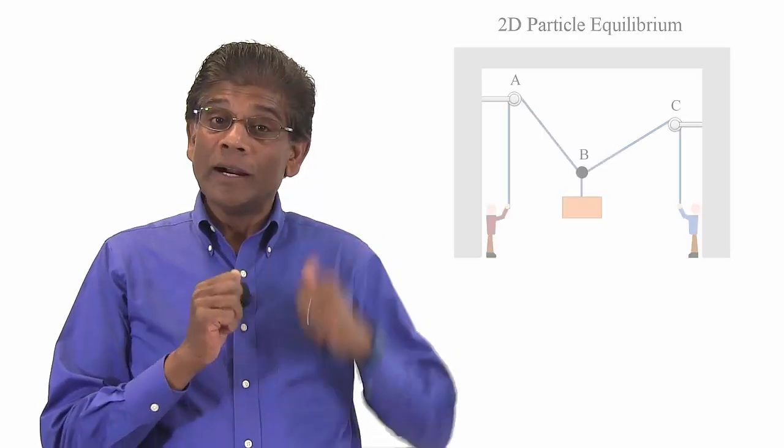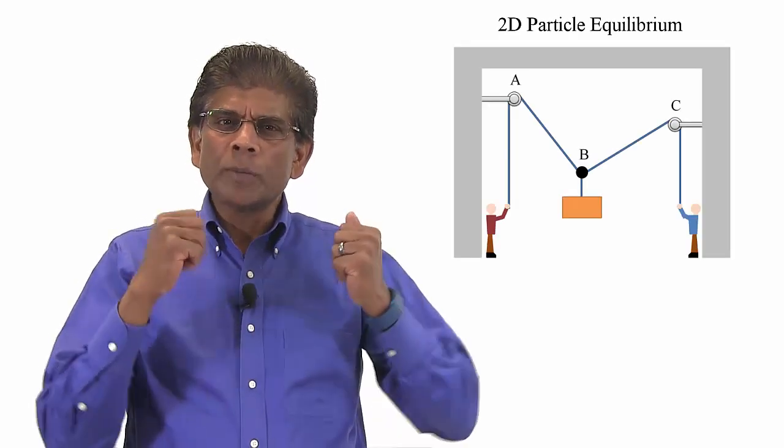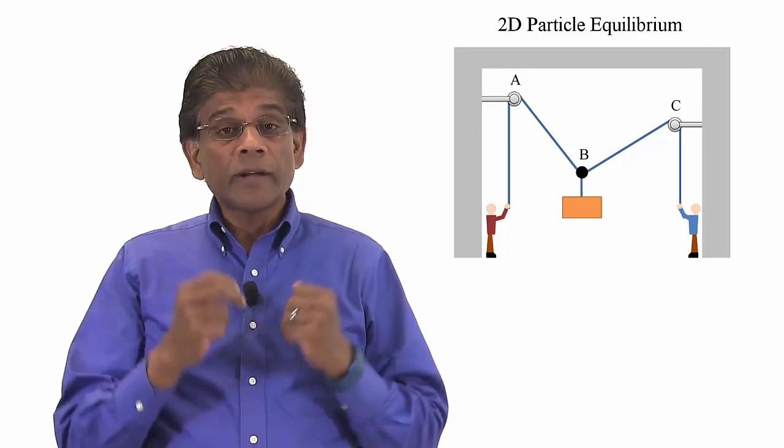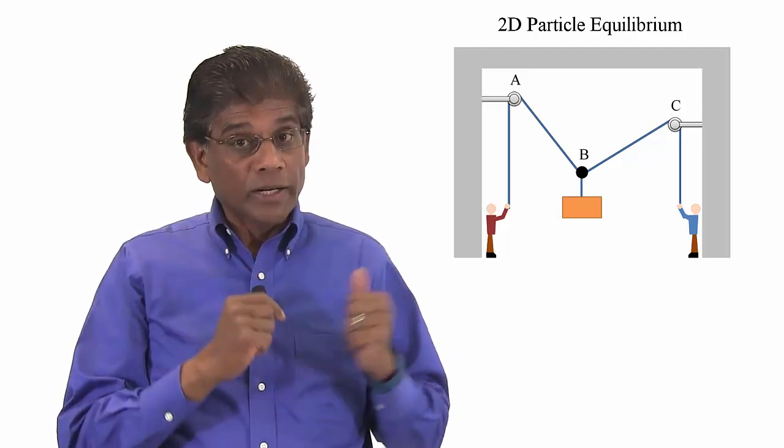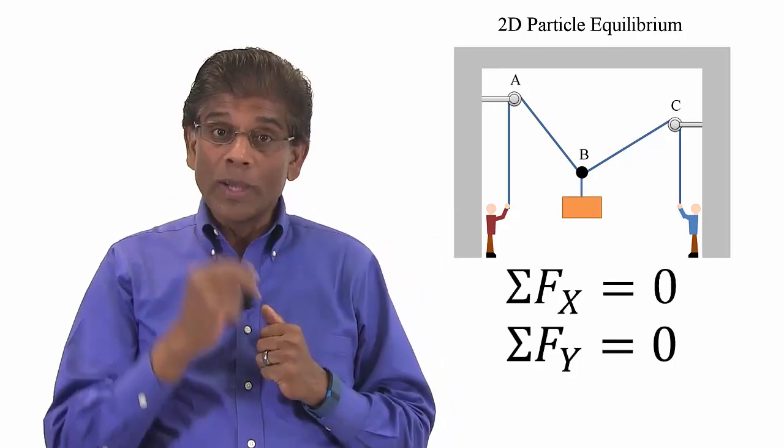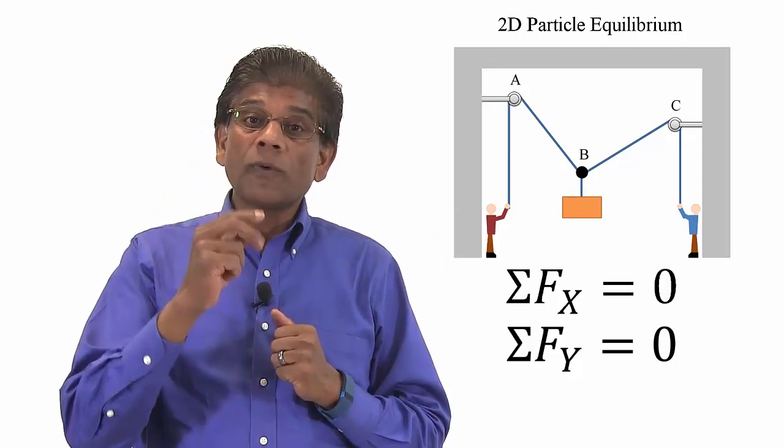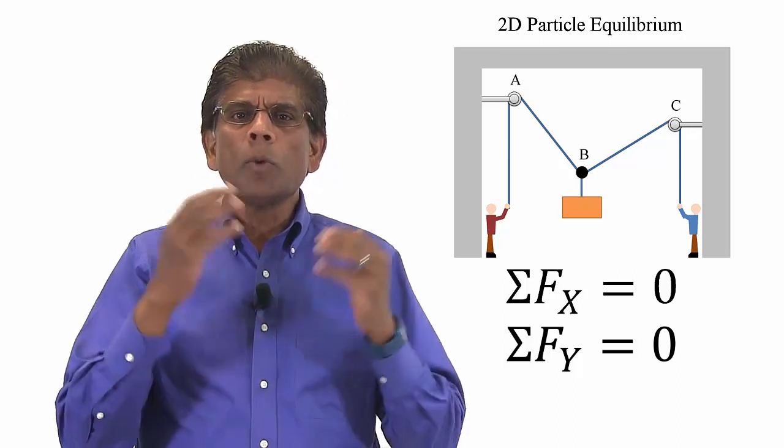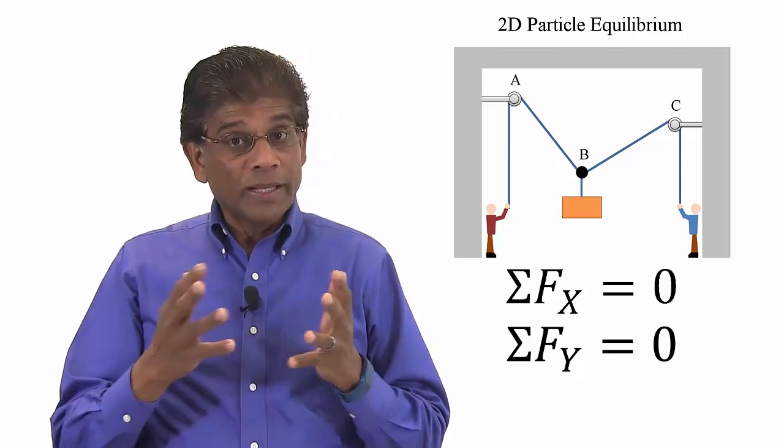We studied two-dimensional particle equilibrium earlier. In two-dimensional particle equilibrium, we can write one vector or two scalar equations. We sum up the forces along x and y axis and get two equations. We can then solve for two unknowns. There is no moment equation because we deal with particle.